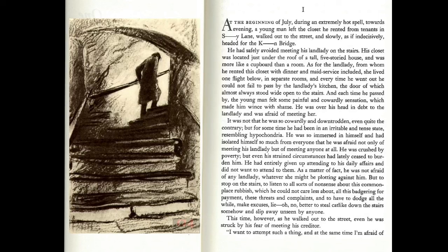"He had but to stop on the stairs, to listen to all sorts of nonsense — better to steal cat-like down the stairs." This time, however, as he walked out to the street, even he was struck by his fear of meeting his creditor. Now our narrator just walks inside his head and says — in quotation marks — "I want to attempt no such thing." What? What thing? What are you talking about? There is the beginning of the brilliant trick of just letting you go inside. And that's what he's going to do for 500 pages — take you as deep into this mind and this person as he possibly could.